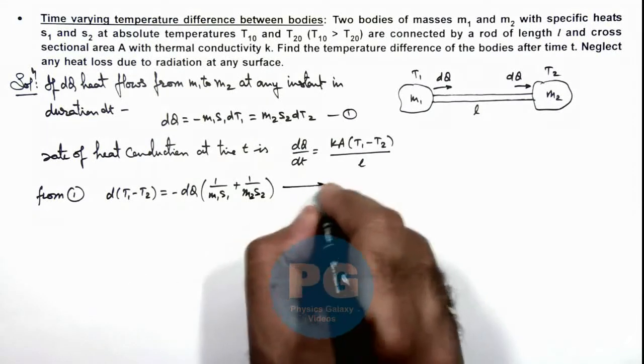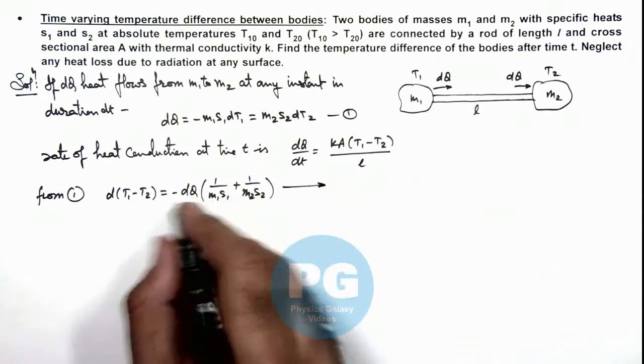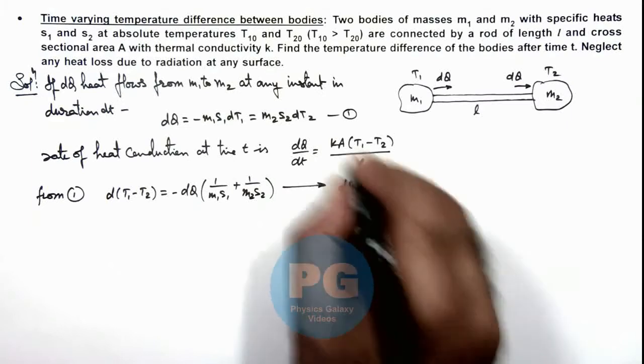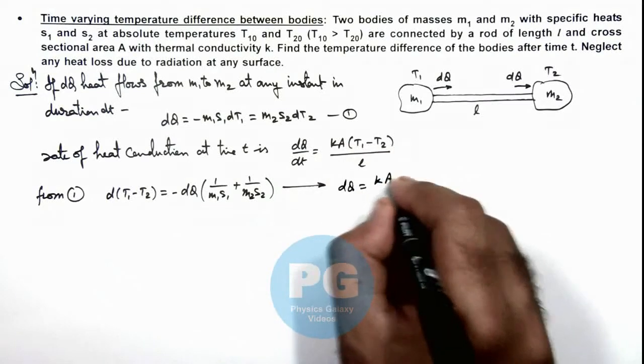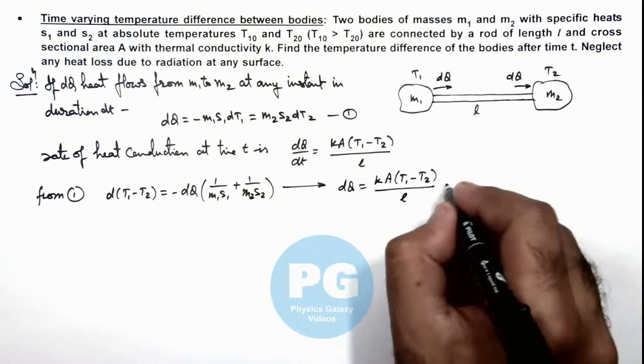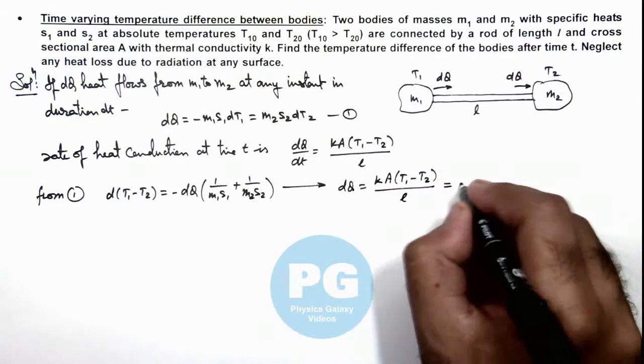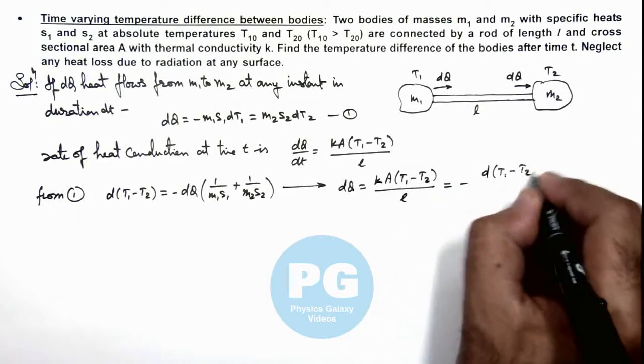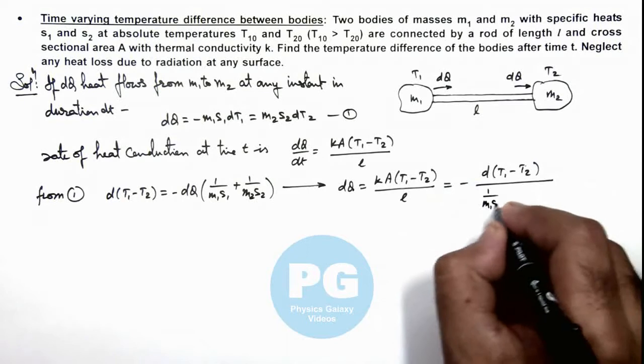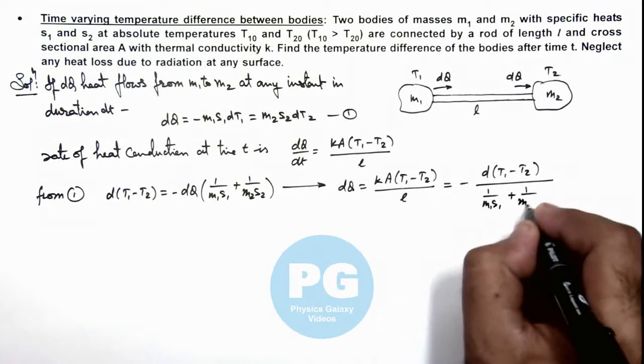So from here we can see this dQ/dt we can equate here. The value of dQ is equal to kA(T₁ - T₂) divided by l, and we can equate it to negative of d(T₁ - T₂) divided by (1/m₁s₁ + 1/m₂s₂).